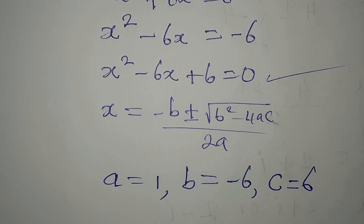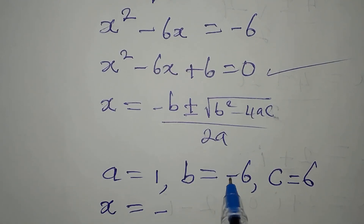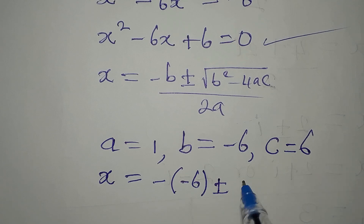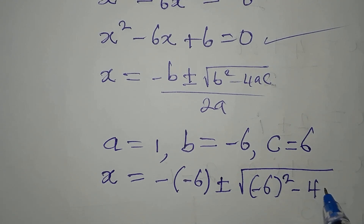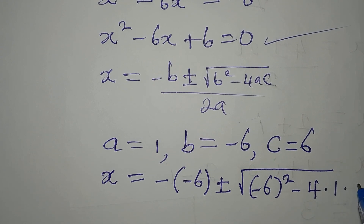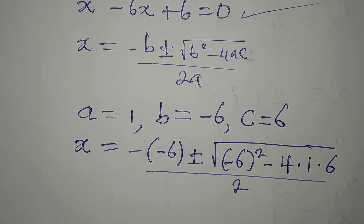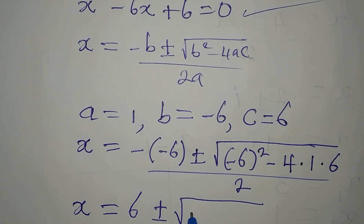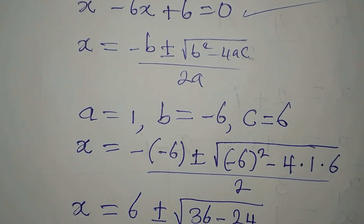Now let's substitute into the formula. x equals negative of (negative 6), plus or minus the square root of (negative 6) squared minus 4 times 1 times 6, all divided by 2 times 1, which gives 2. So x equals positive 6 plus or minus the square root of 36 minus 24, divided by 2. That gives us 36 minus 24 equals 12.